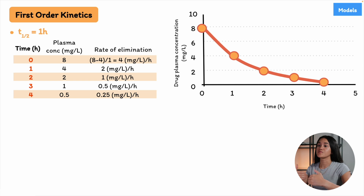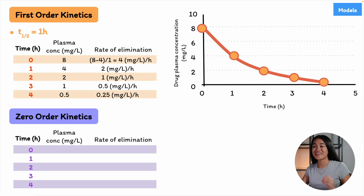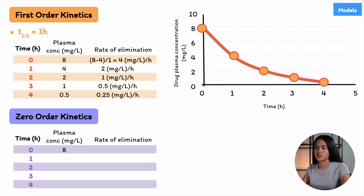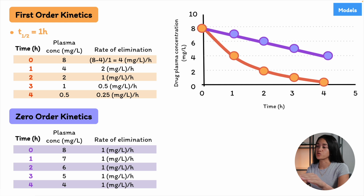Now comparing to zero-order elimination kinetics: the rate of elimination is constant, meaning we eliminate the same quantity of drug every hour. Starting from the same point — say 8 mg/L — with a rate of elimination set at 1 mg/L per hour, every hour we eliminate 1 mg/L. So starting at 8, after one hour we get 7, after two hours 6, then 5, then after four hours we get 4 mg/L. Following that rule, we get a typical linear plot.